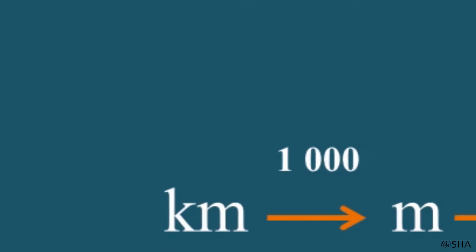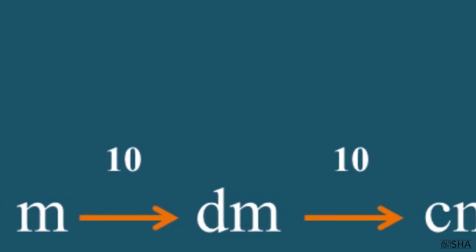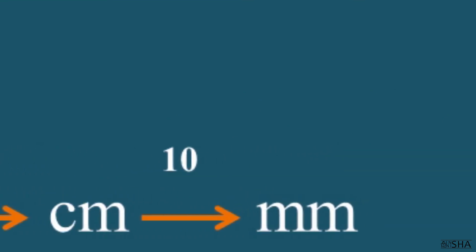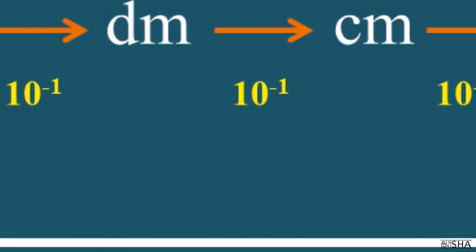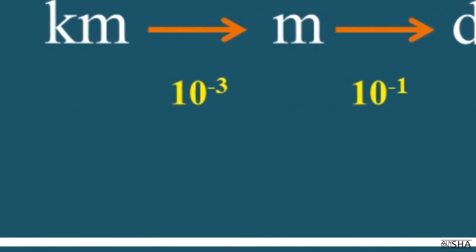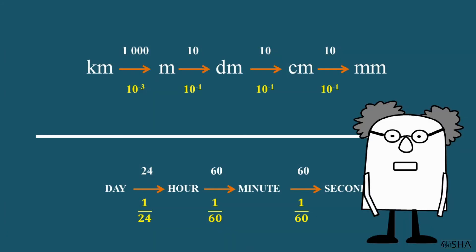Remember that when you convert in the same direction as the arrows show, you multiply by upper factors. And if you convert in the opposite direction, then multiply by lower factors.